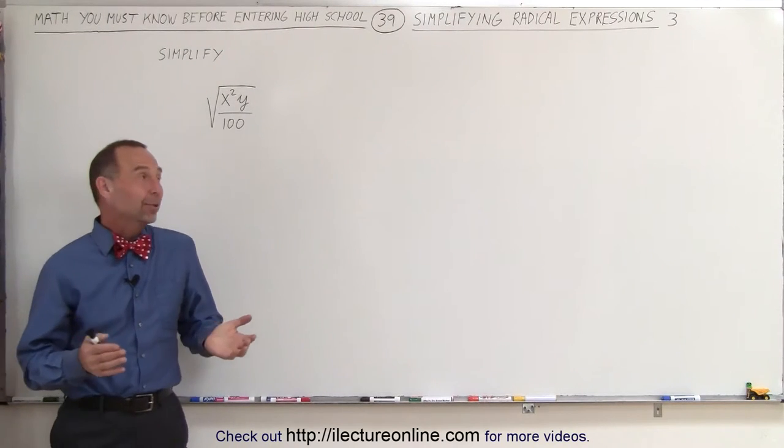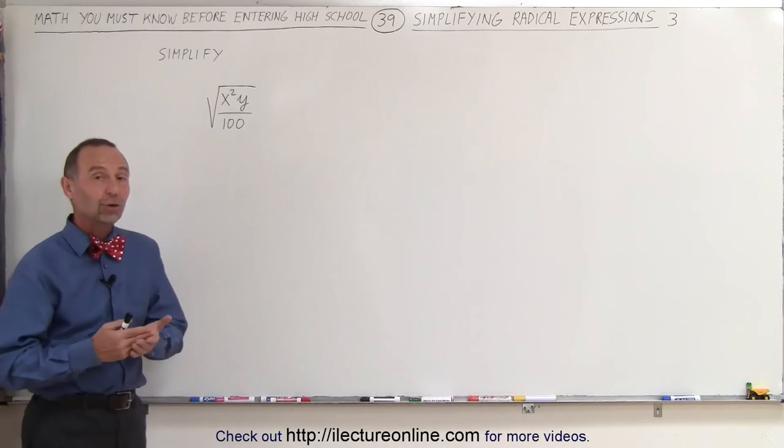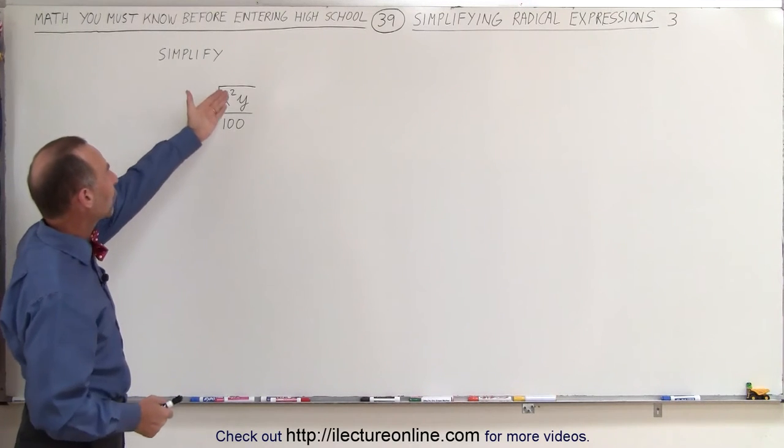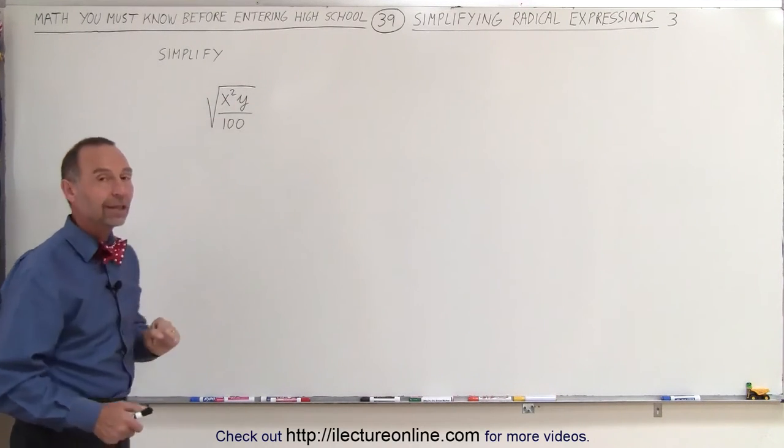Welcome to iLectuOnline. Our next example looks simple enough, but it shows some very important rules. We have a radical with x²y in the numerator and 100 in the denominator.